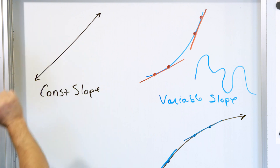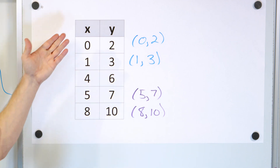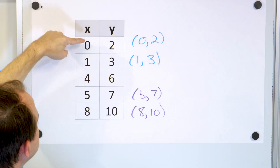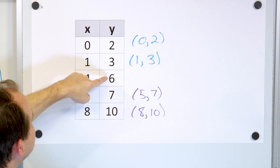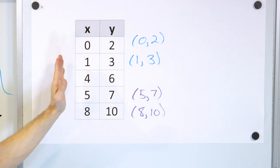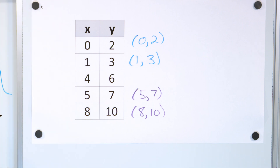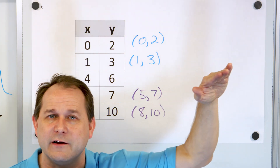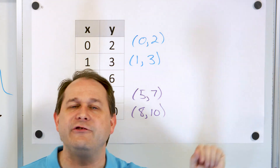So constant slope — that's what a line is. Variable slope — that's pretty much any other path that's not a line. Here we have some data for problem number one. We have x values and y values. This data can represent anything: x could be time in seconds, and y could be the altitude of a butterfly. So zero seconds the butterfly is two centimeters in the air, at one second it's at three centimeters, at four seconds it's six centimeters, and so on. These x, y values can be written as points: zero comma two, one comma three, and so on.